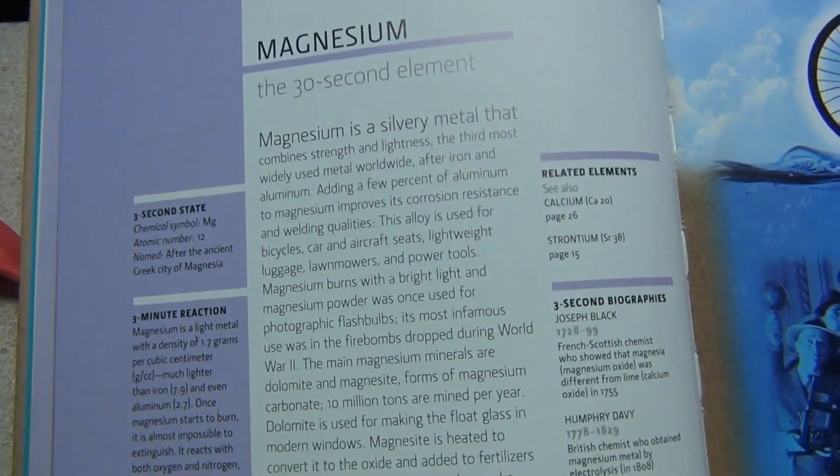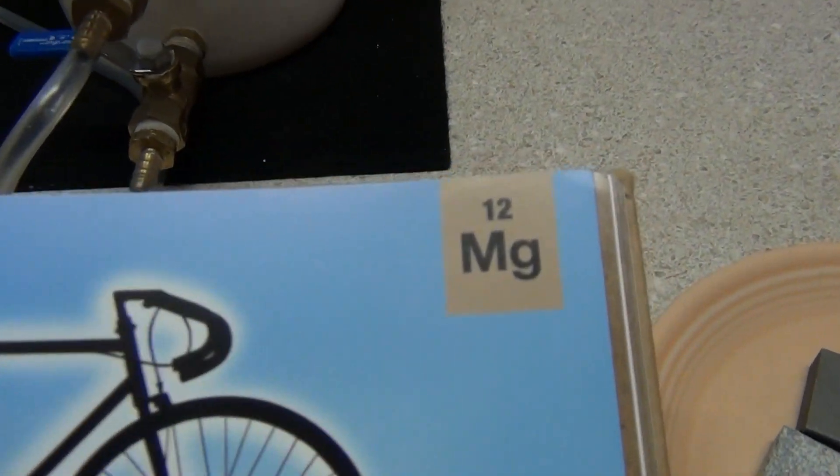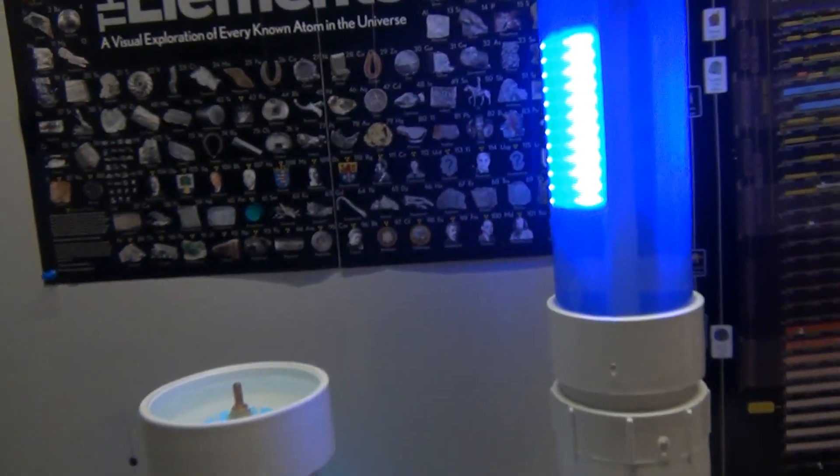So this metal right here is an element I like to use to produce my hydrogen gas, number 12 on the table of elements. There's lots of other metals you can use, but that's my favorite.